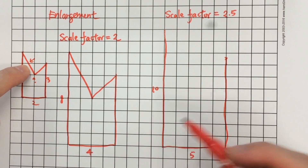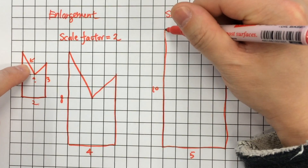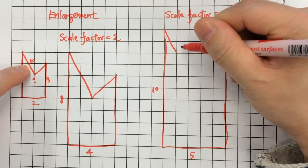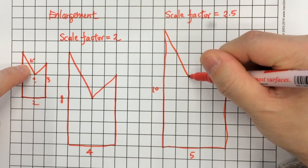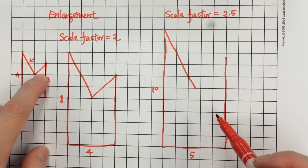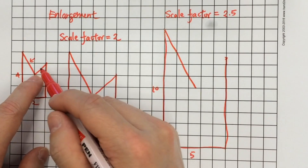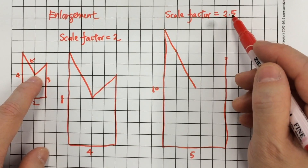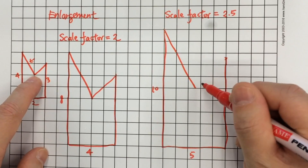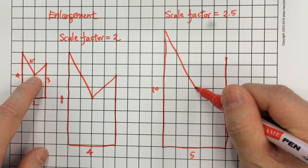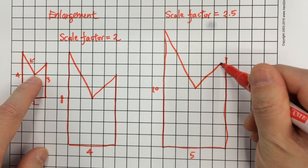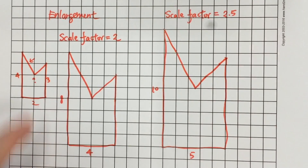Now what about the diagonal sides? This side is the diagonal of 2 squares — we multiply this by 2.5. The remaining diagonal of 1 square we also multiply by 2.5, giving values of 1, 2, and 2.5.